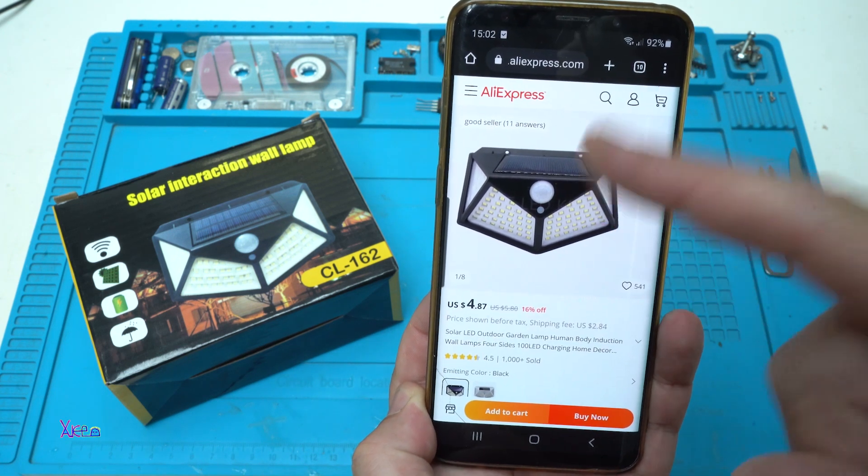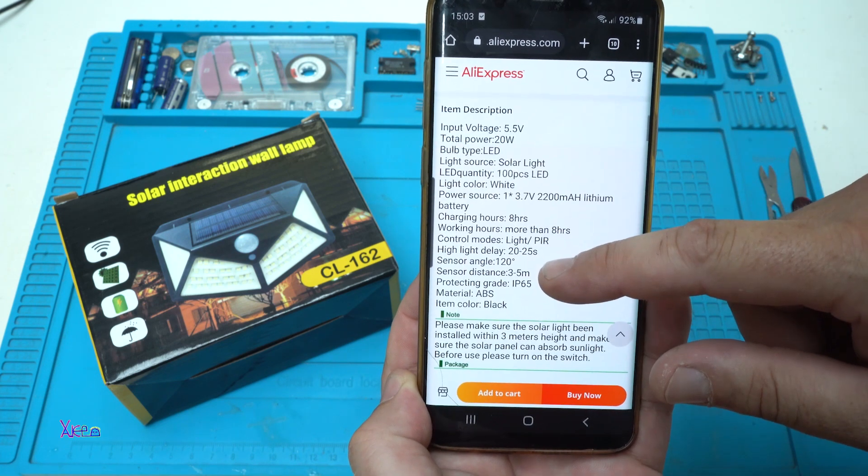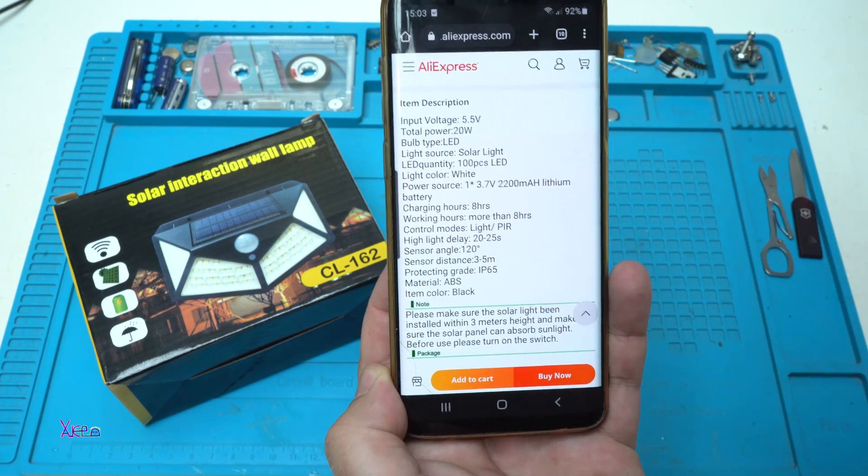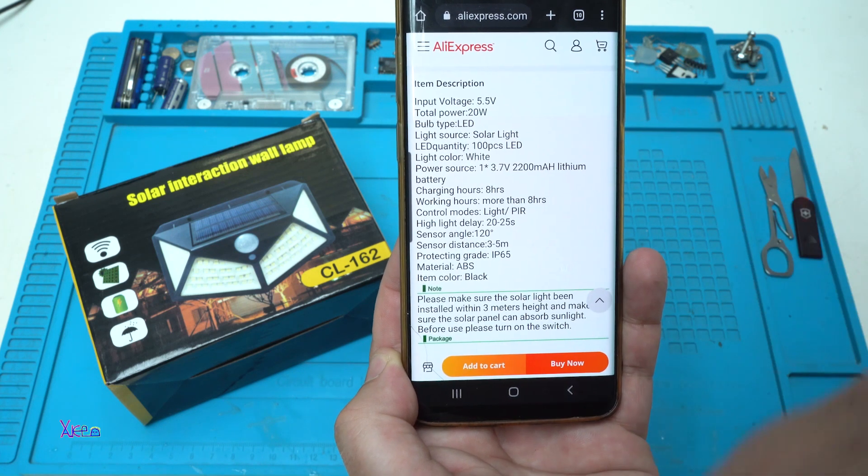Here are the descriptions: input voltage 5.5 volts from the solar panel, total power 20 watts.